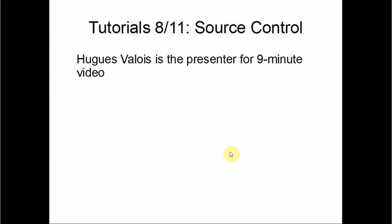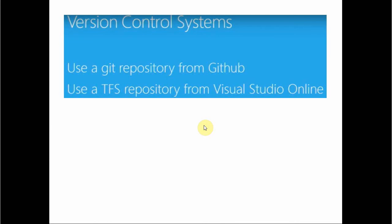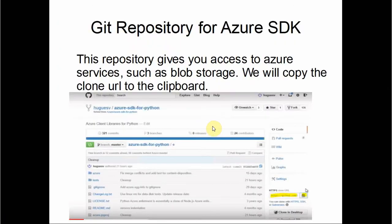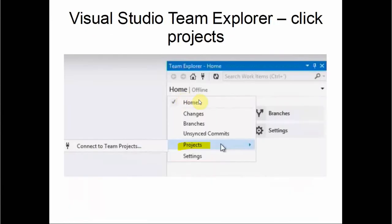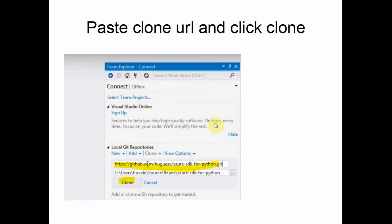Tutorial eight covers source control — we're going to look at using Git and TFS. This is a nine-minute video. We'll clone a repository from GitHub and look at using TFS for Visual Studio. The Git repository for the Azure SDK gives us access to Azure services such as blob storage, which we'll use as an example to see how we can use Git to make a branch of this website. You click on Projects to get started.